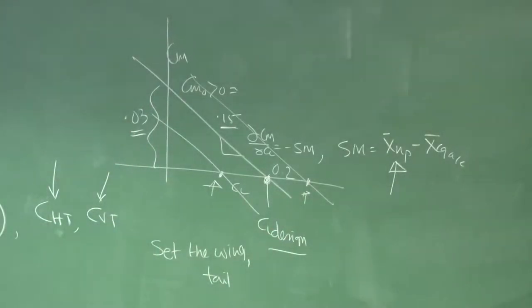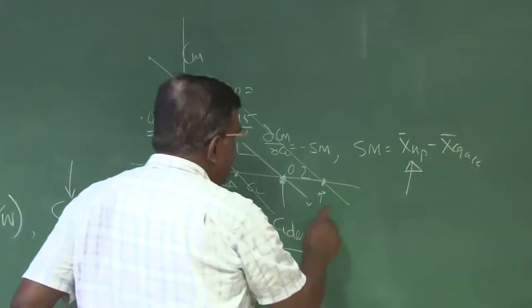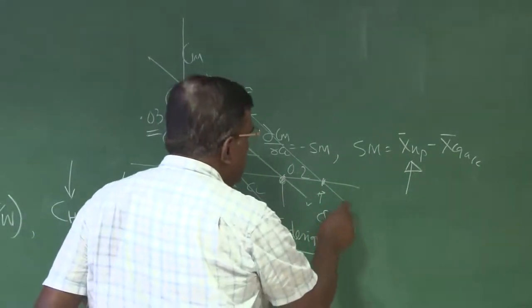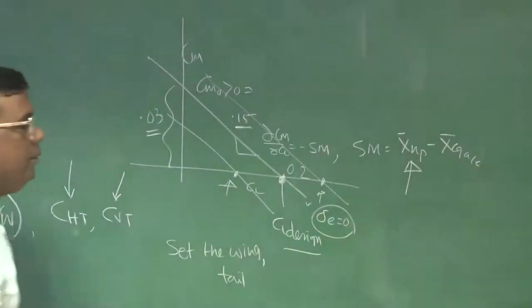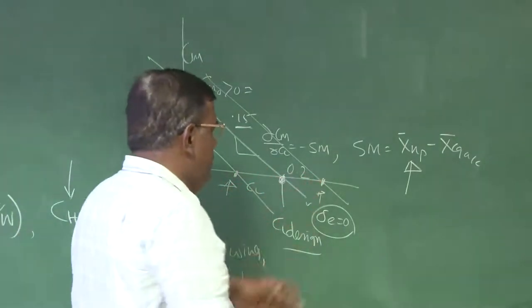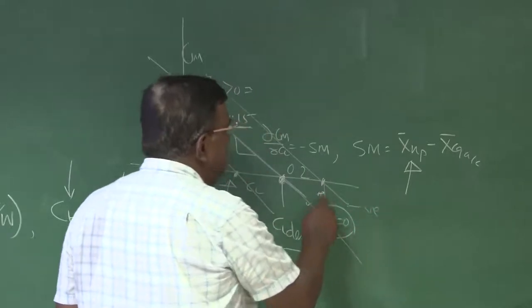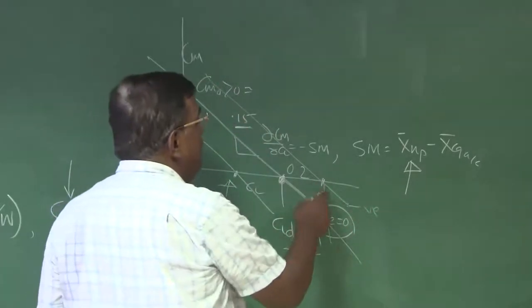Because when I am designing the basic configuration, that time I will ensure that the elevator requirement is 0, so that trim drag is 0. But when I am going to go from here to here, you could see that immediately it will generate negative pitching moment. So I have to counter that. So I have to give elevator up.